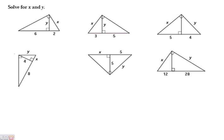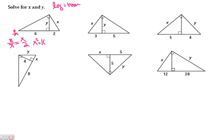Let's solve for X and Y. X is a leg, so leg means boomerang. My little guy starts at the vertex away from the leg and throws his boomerang the length of the hypotenuse — 6 plus 2 is 8. So 8 over X equals X over 2. Cross multiply and solve: X squared equals 16, which means X equals 4.